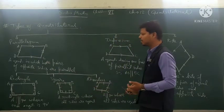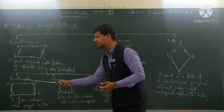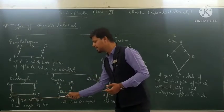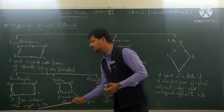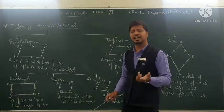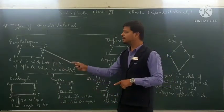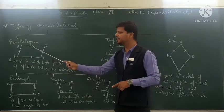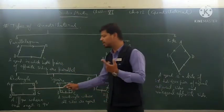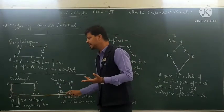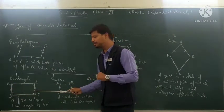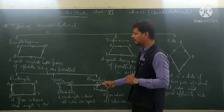A rectangle is a parallelogram whose each angle is 90 degrees. If you make each angle of a parallelogram 90 degrees, it becomes a rectangle. So the properties of a rectangle are: all angles are 90 degrees, opposite sides are equal, and opposite sides are parallel.